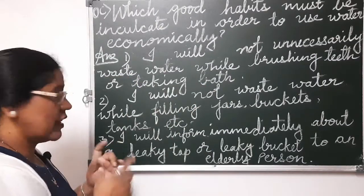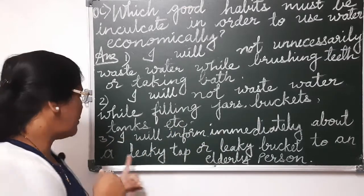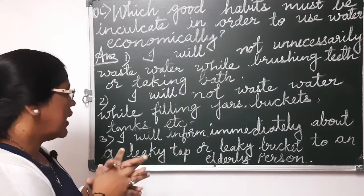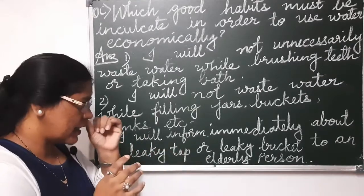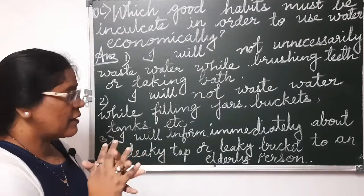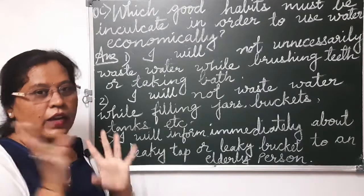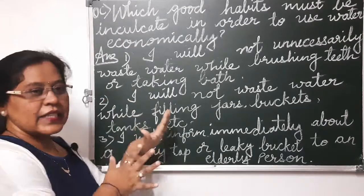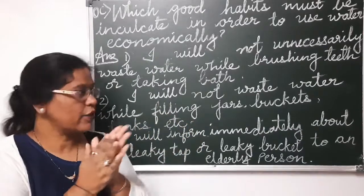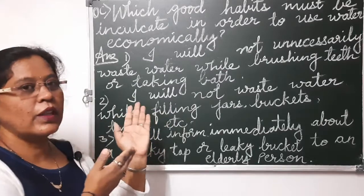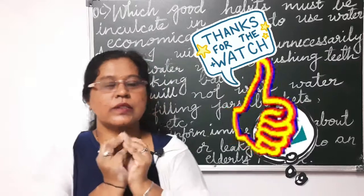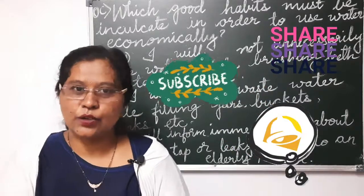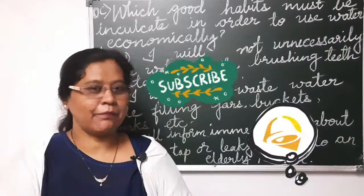Third point — I will inform an elderly person immediately about a leaky tap or leaky bucket. If you see any tap or bucket leaking, it is your duty to tell your elders so that the water can be saved in another vessel. Please write down all answers in your notebooks. Thank you for watching — please like, share, subscribe, and tap the bell icon for notifications. Stay at home, stay happy, keep smiling.